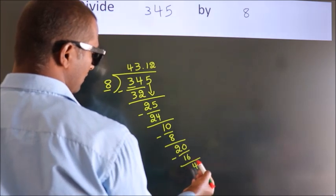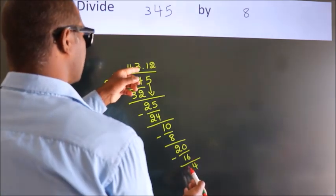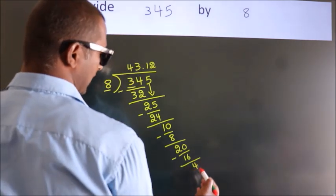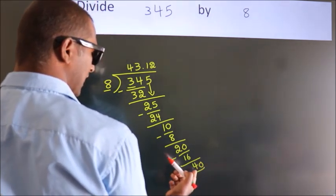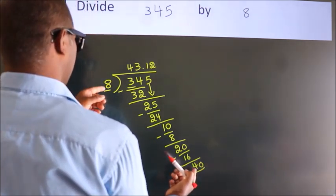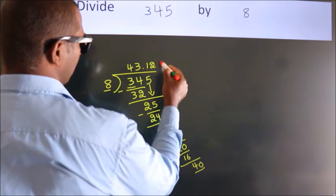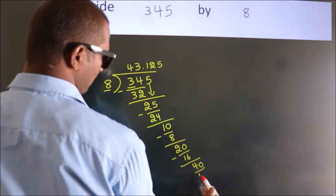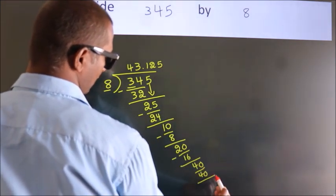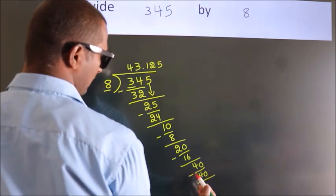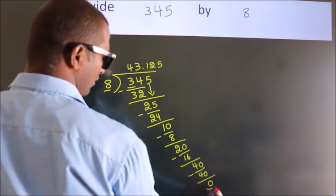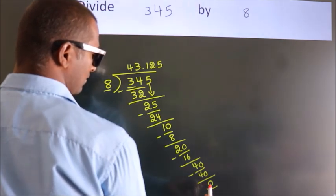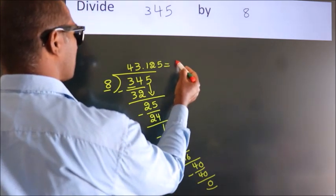After this, we already have the decimal. So directly take 0. So, 40. When do we get 40 in the 8 table? 8 fives, 40. Now we subtract. We get 0. Here we got remainder 0. So this is our quotient.